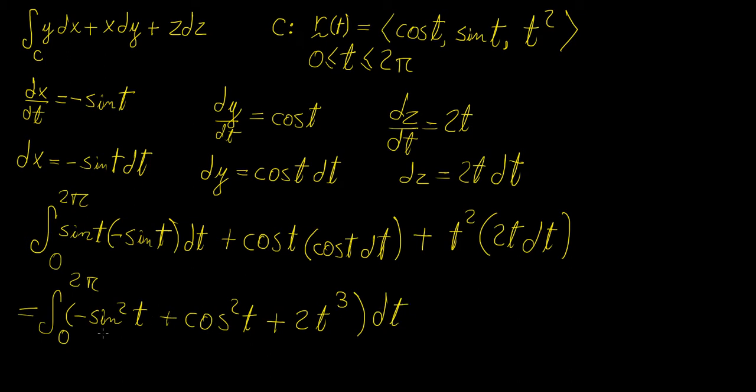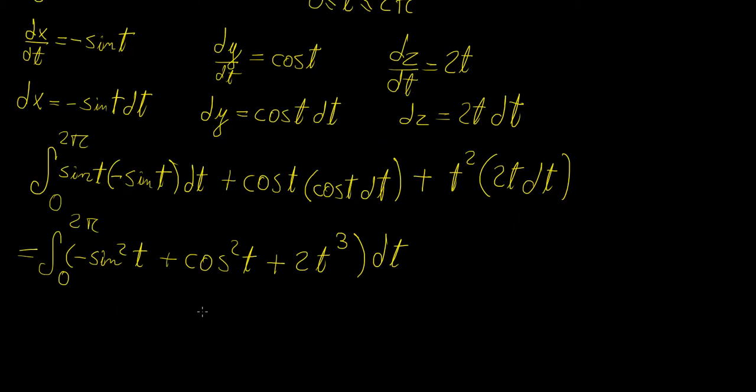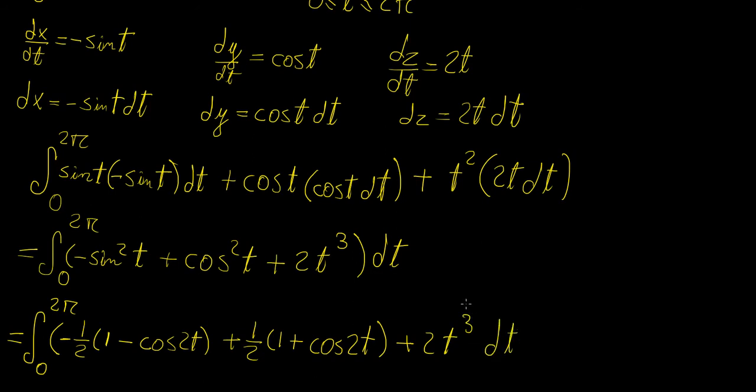And all of this with respect to t. And then you might think, oh maybe we could replace this by 1, but we have this negative sign in here. So clearly that's not going to be an option, so we're just going to have to do some trigonometric substitutions. For this one we're going to have minus half of 1 minus cosine of 2t. Then for this one we're going to have half of 1 plus cosine of 2t. I'm just using some standard trigonometric substitutions here. And then the last one is just 2t cubed dt.